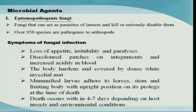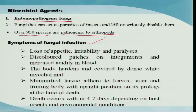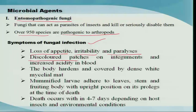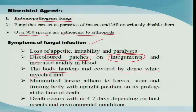Looking at entomopathogenic fungi, there are over 950 species which are pathogenic to arthropods. Some common symptoms of fungal infection include loss of appetite, irritability, and paralysis. Initially, discolored patches appear on the cuticle or integument, and then the body later hardens and becomes covered with a dense white mycelial mat.